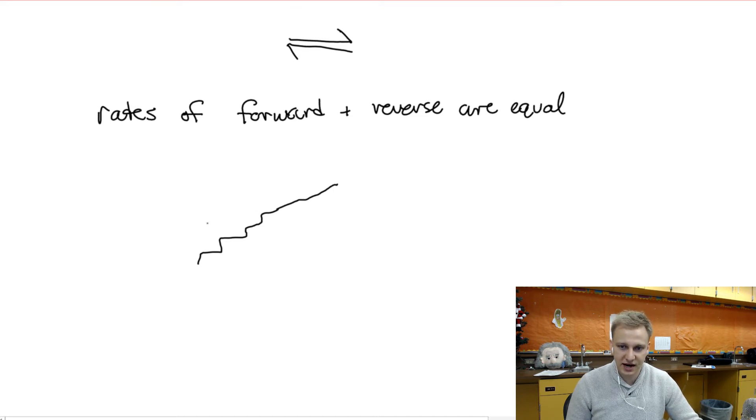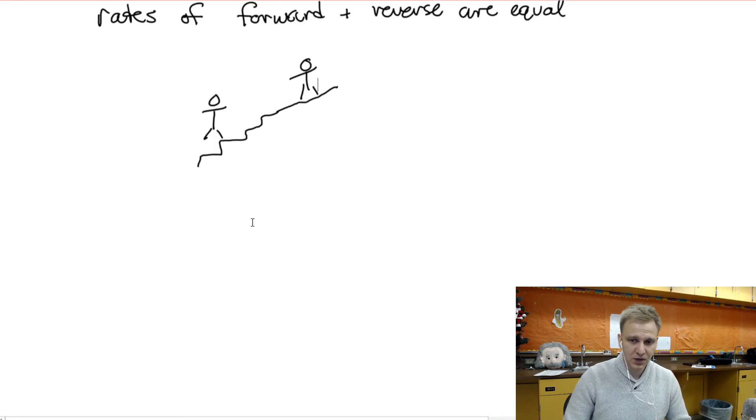There's my really rough stairs, here's a human being. You can be anywhere on that series of steps. You might be here, you might be here, it really depends. And so we can have, as long as the rates are the same, as long as this individual is staying in the same place, we have equilibrium.